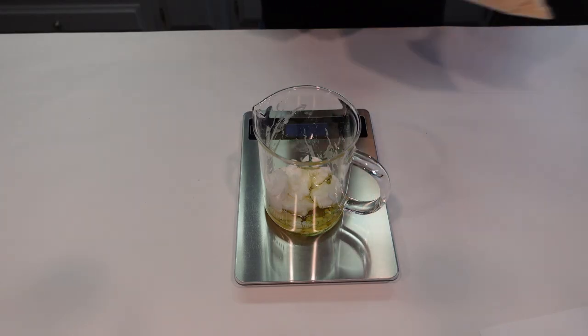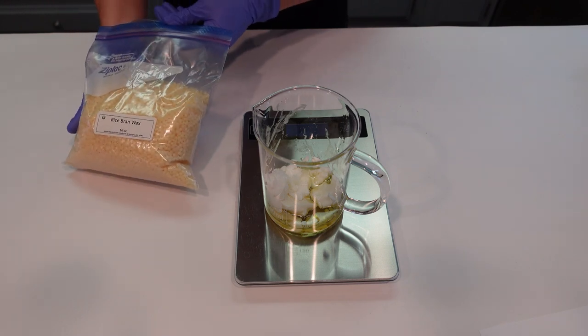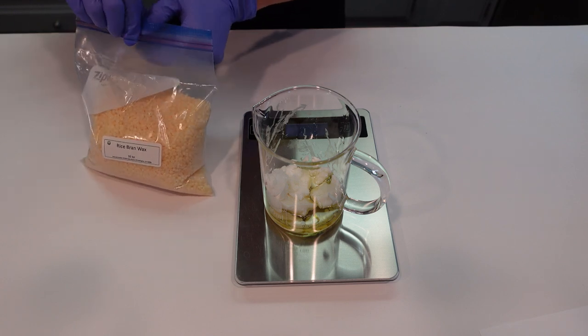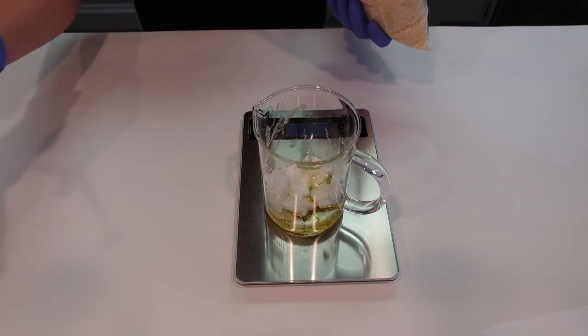Okay, then we're going to be adding in some wax. Now, instead of beeswax today I'm going to be using rice bran wax. This is going to keep this formula vegan friendly. This is going to lend hardness to the bar, and it's also got antioxidants and vitamin E just like the oil does.